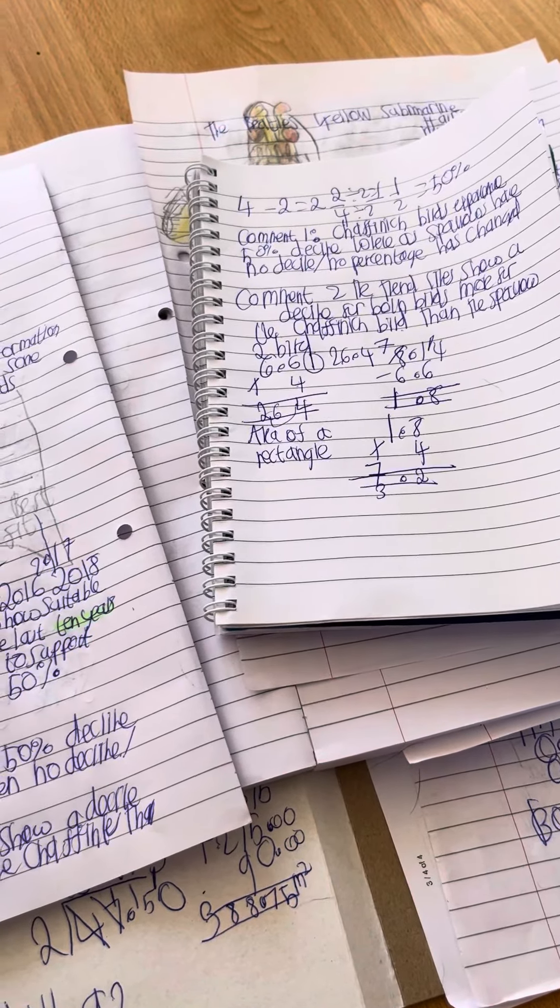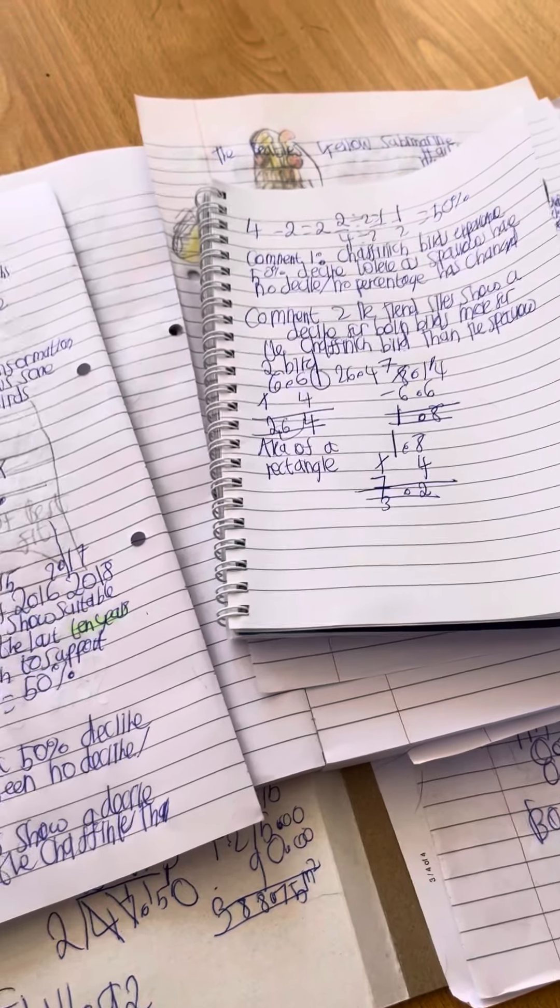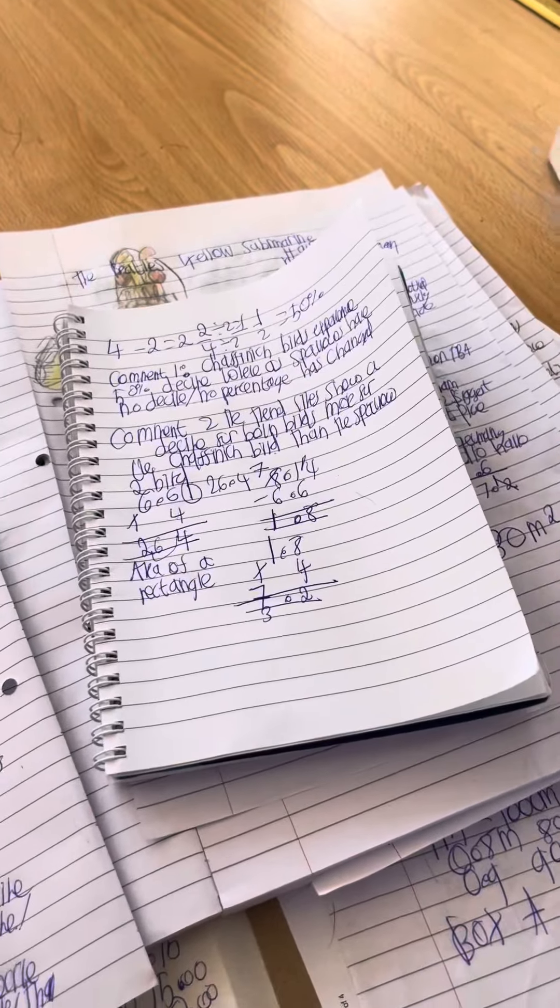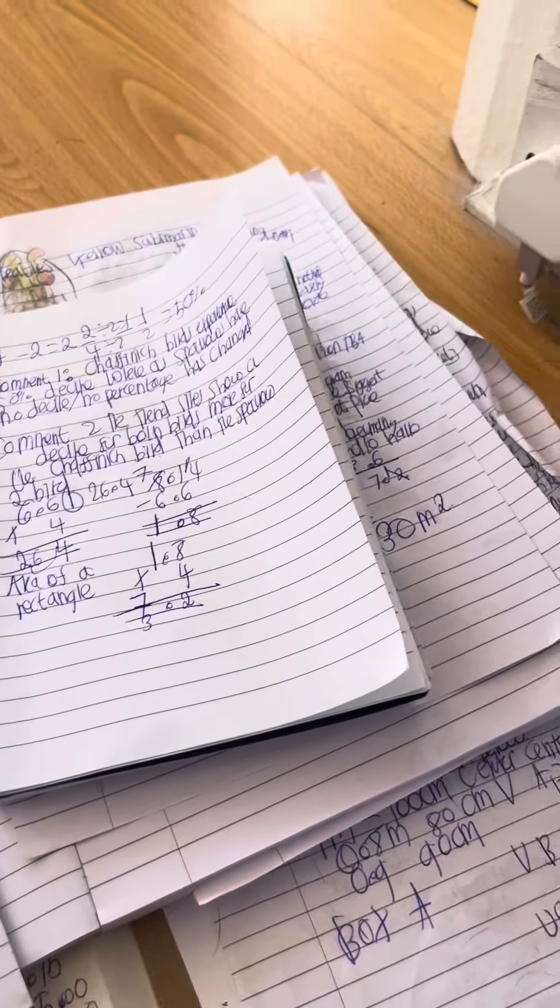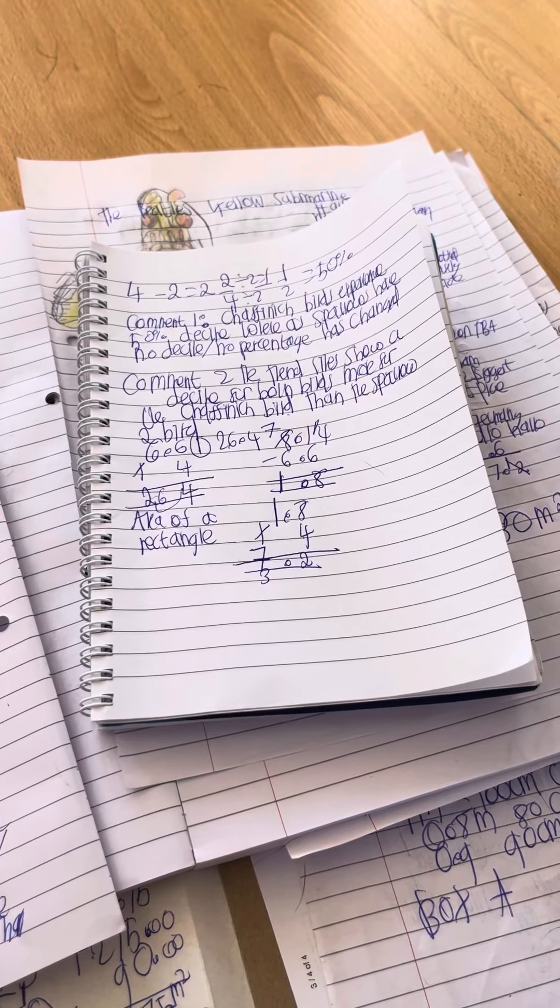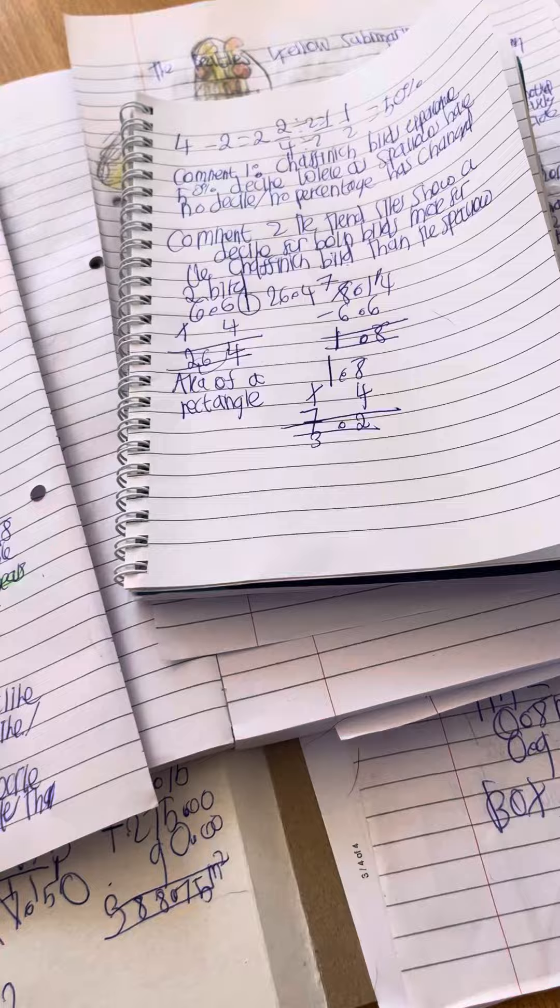Then that's the area of a rectangle. The next thing you need to do is 8.14 take away 6.6, because this shape is a compound shape, which means you need to find the missing area of that part of the shape. So 8.14 take away 6.6, if you do 14 take away 6.6 gives us 8 decimal points. 7 times 6 is 1, so 1.8.